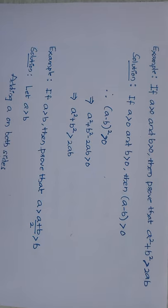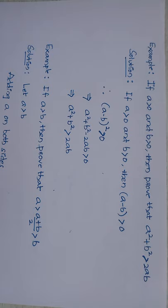Hi everyone. In this class let me see some examples based on your real number system. Example 1: if a is greater than 0 and b is greater than 0, then prove that a squared plus b squared is greater than 2ab.